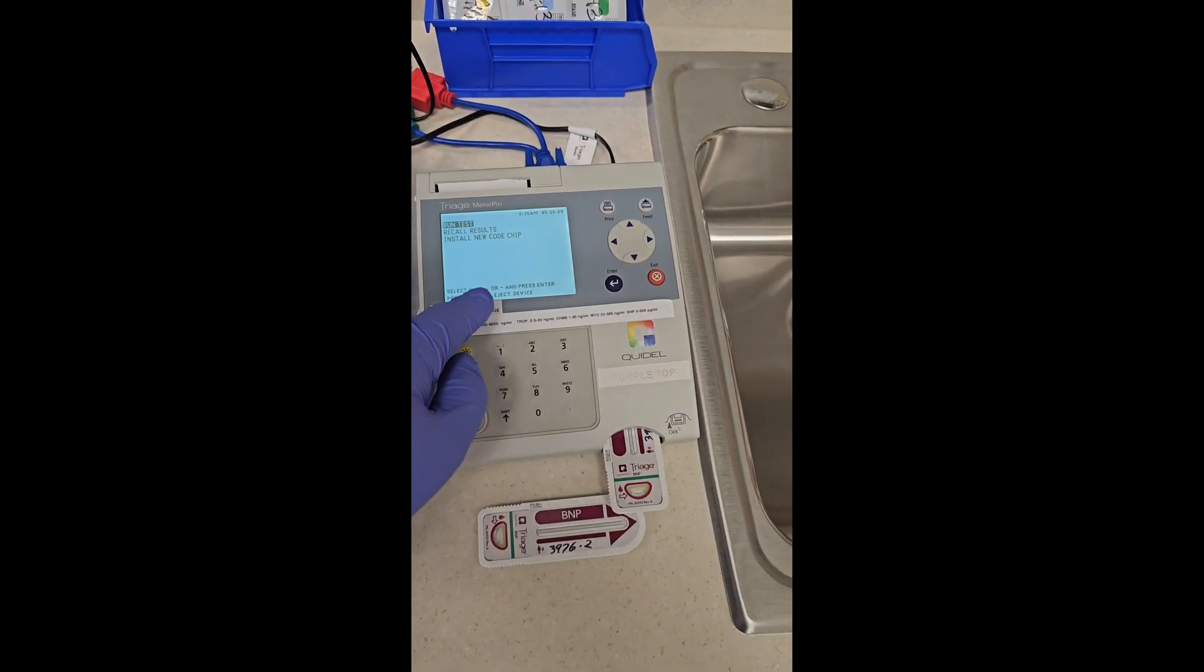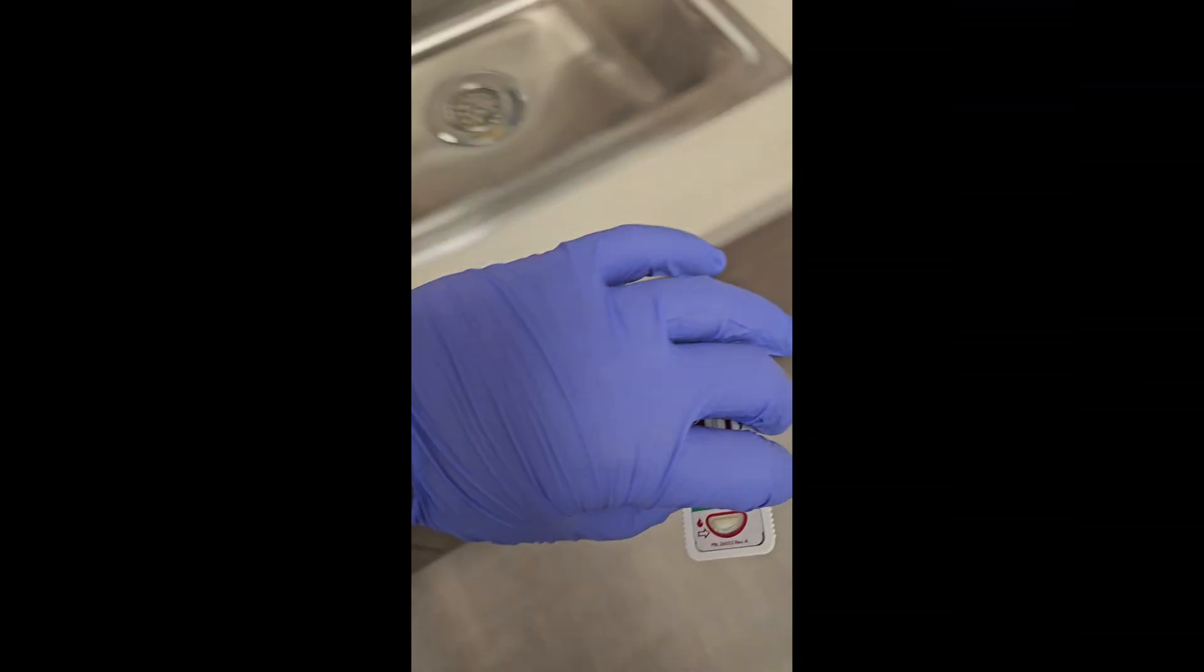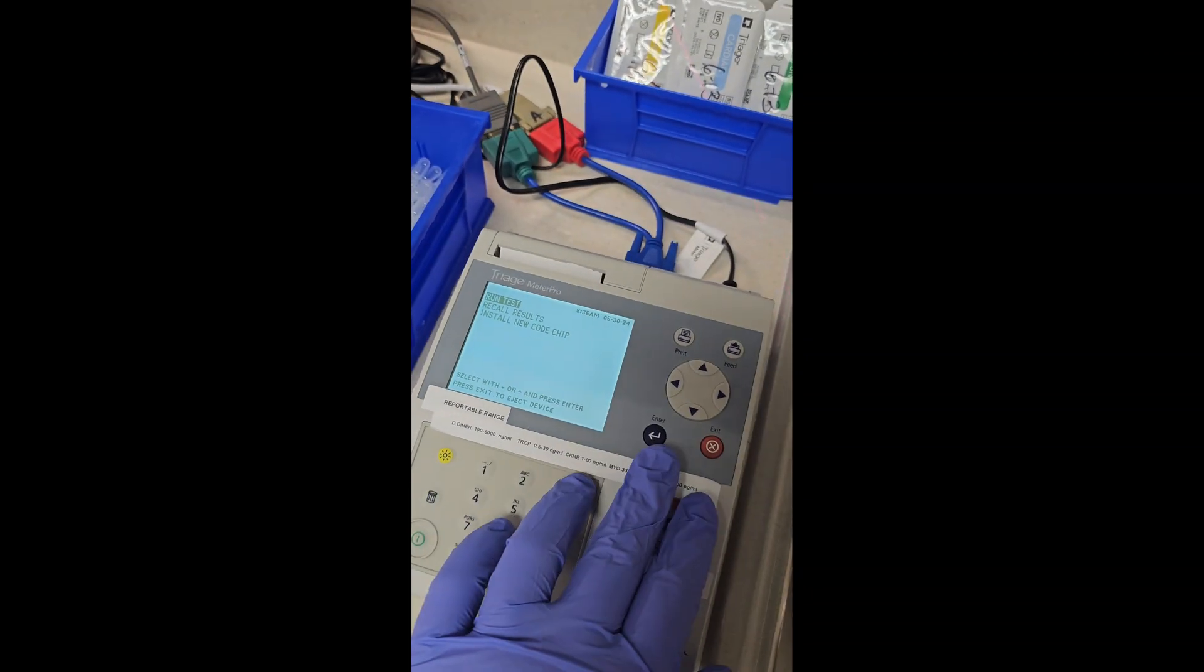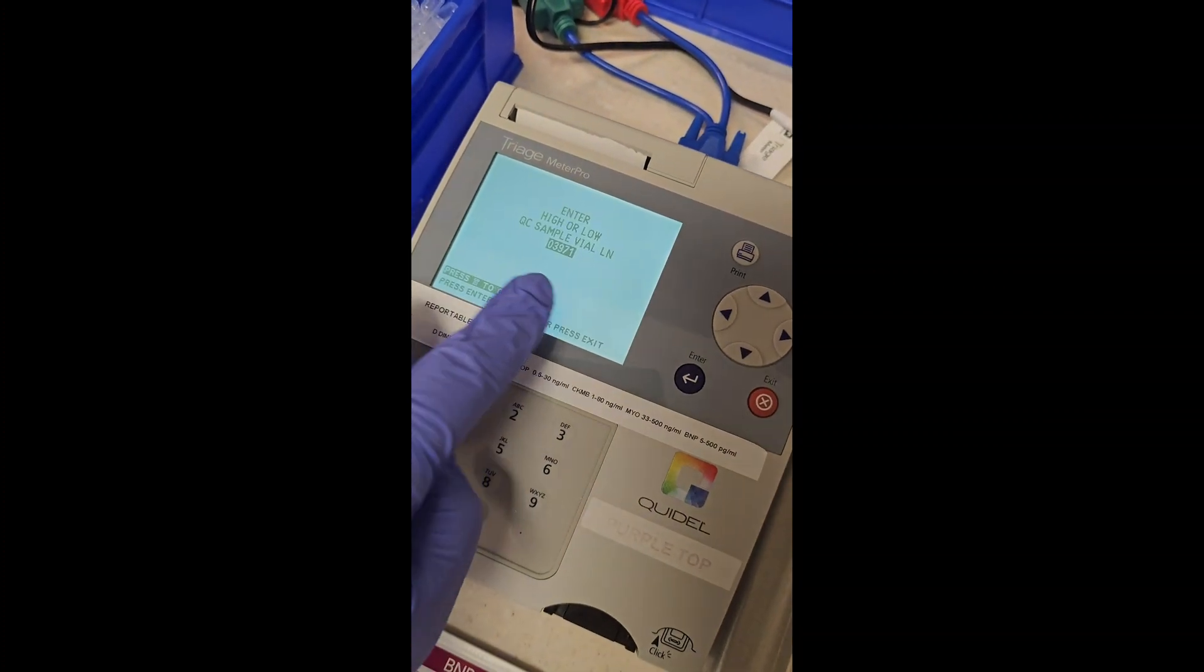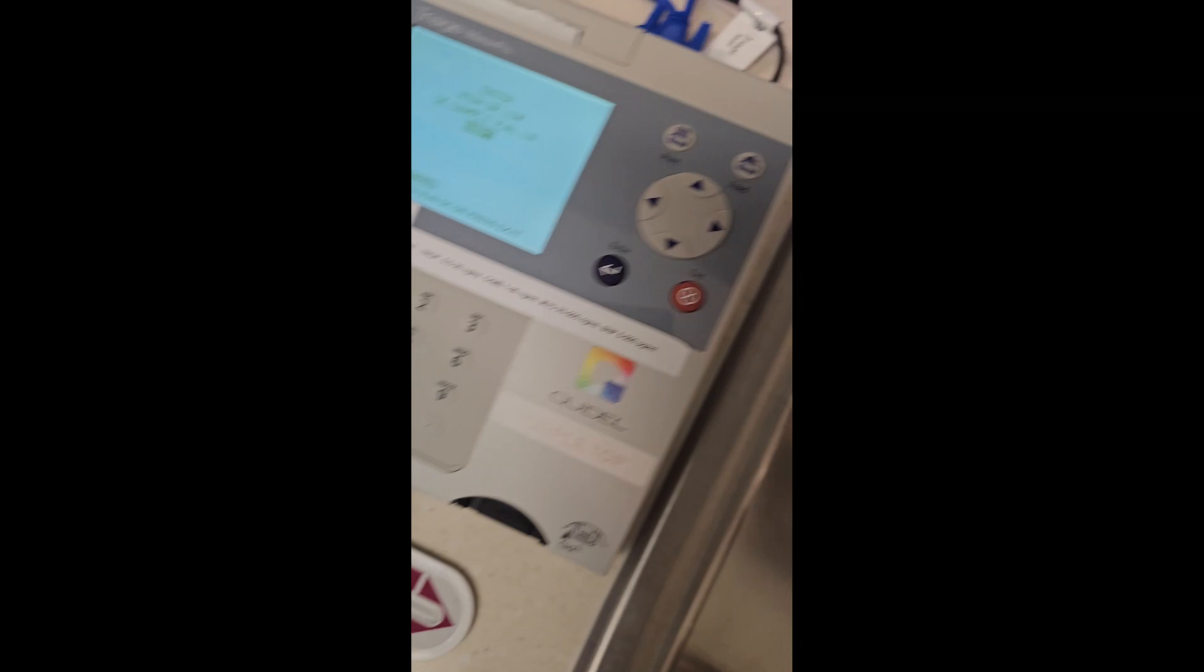Hit exit to go back to your main screen. We'll take our level one and toss that. Run test. It's the same process for level two. QC sample. That number has changed now, it's 3976.